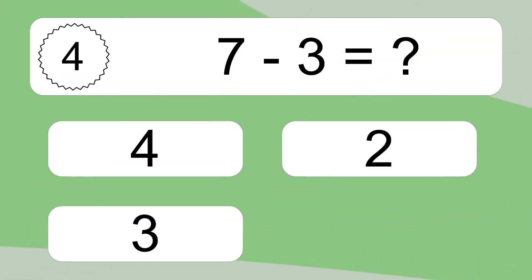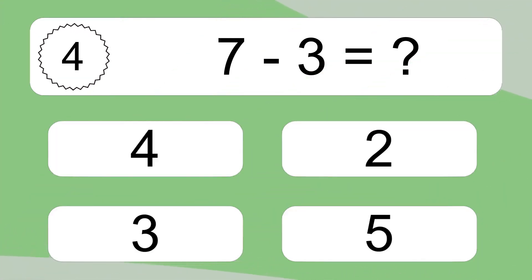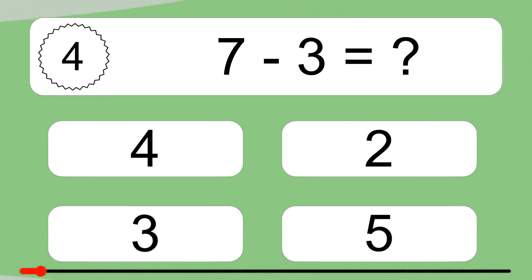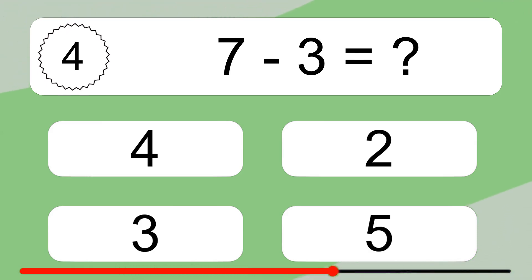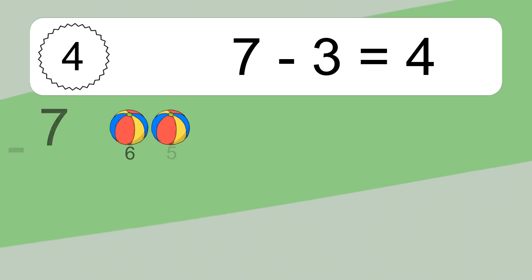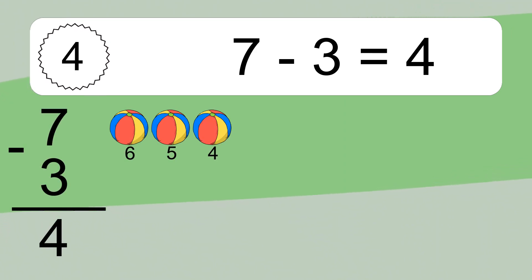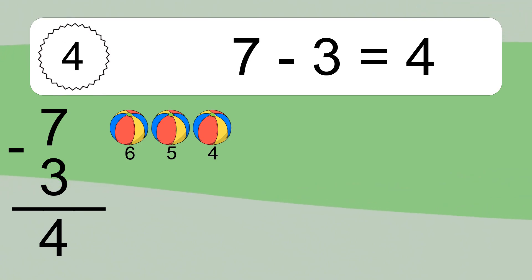7 minus 3 equals what? 7 minus 3 equals 4. Let's count it. 6, 5, 4.